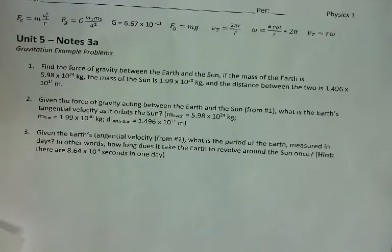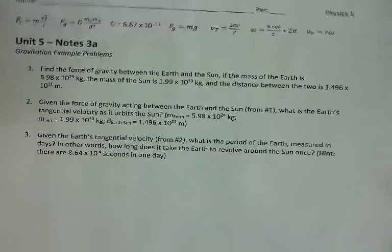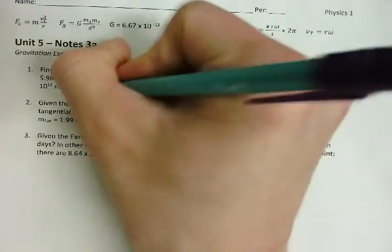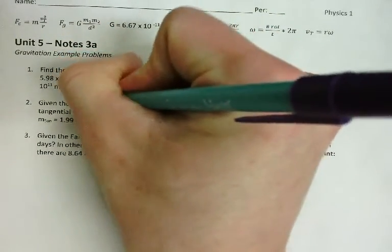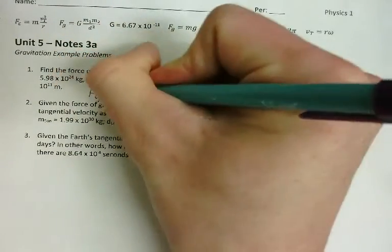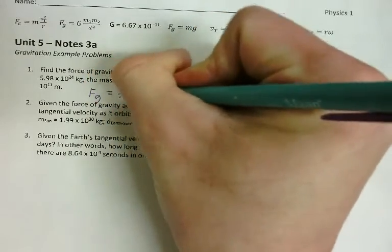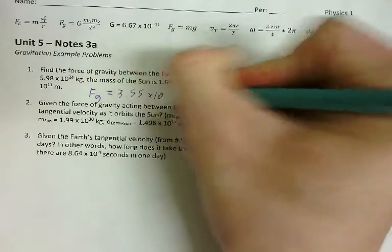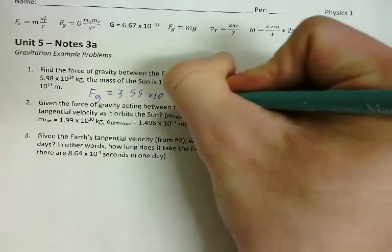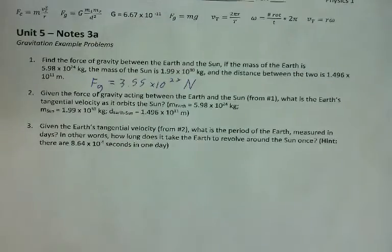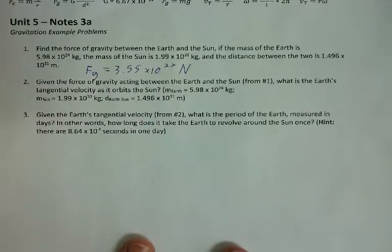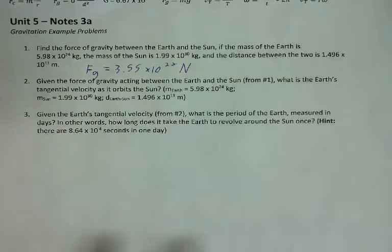Because you already solved that problem. There's no point in redoing it again because we already figured it out. So the force of gravity between the earth and the sun is 3.55 times 10 to the 22nd newtons. All right. There we go. I told you it was going to be easy. Now, number two.